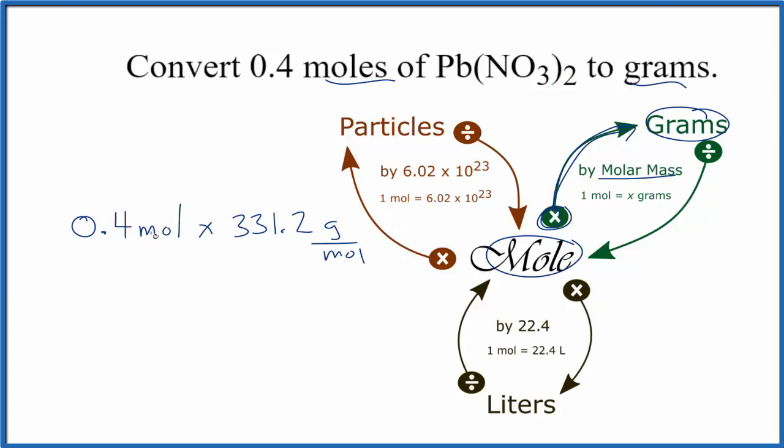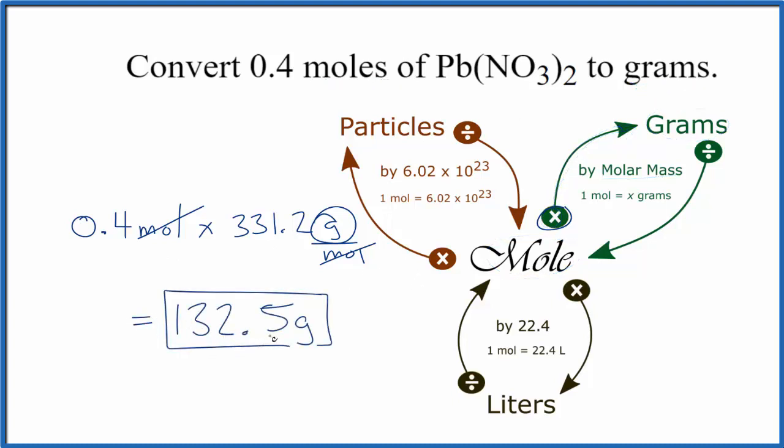So we multiply. We have moles on top and the bottom. They cancel out. That gives us grams. That's what we're looking for. So we know we set it up correctly. We multiply and get 132.5 grams of lead nitrate.